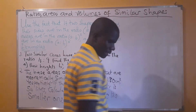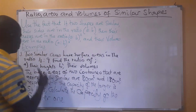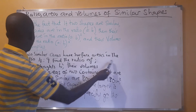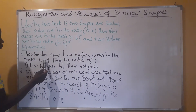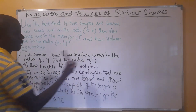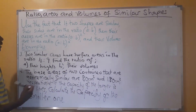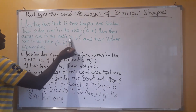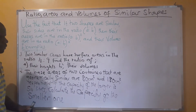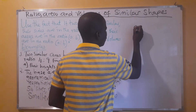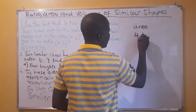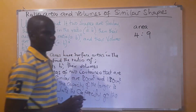Let's look at the examples under consideration. Two similar cones have surface areas in the ratio 4 to 9. This ratio is for area — it corresponds to the area position in our framework. We have been given the area ratio.